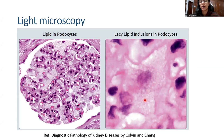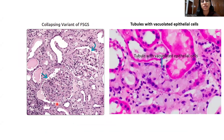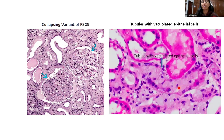Sometimes in Fabry's disease, light microscopy can show very nonspecific findings — it can have nonspecific interstitial fibrosis and tubular atrophy (IFTA), as well as focal and segmental glomerulosclerosis and collapsing lesions. In such cases, it is important to have a high index of suspicion and to look for cells showing foamy change. This foamy change can be seen in podocytes, in the tubular lining epithelial cells of distal convoluted tubules, and also in the endothelium and smooth muscle cells of the vessels, and fibroblasts in the interstitium.